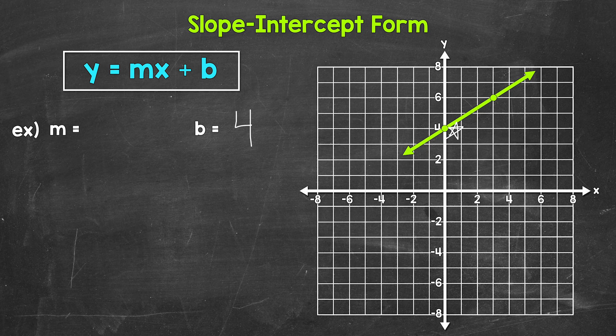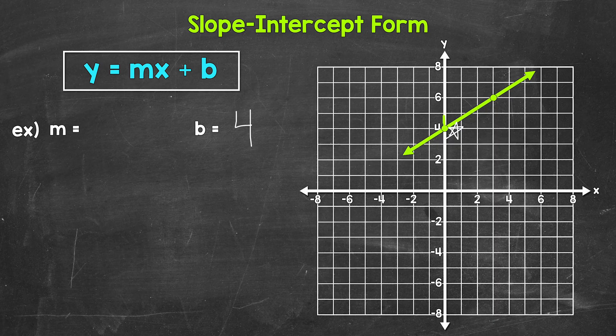So we need to determine how far up or down and then how far over we need to go. Well, we need to go up one unit, two units in order to align with the other point. That's our rise. And since we went up, that's a positive 2. So our rise is 2.